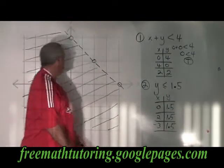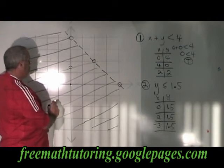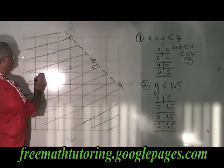Graphing these points, I have 0, 1.5, which is right here, 2, 1.5, which is right here, and negative 3, 1.5, which is right here.